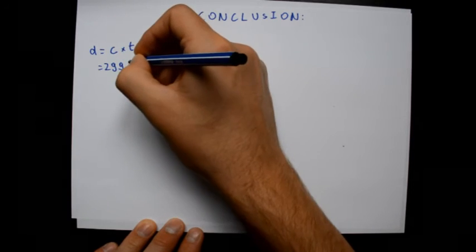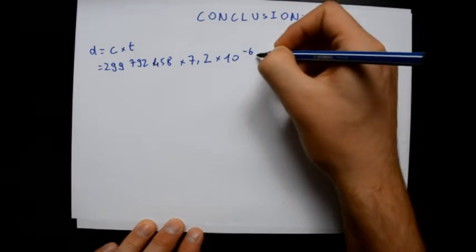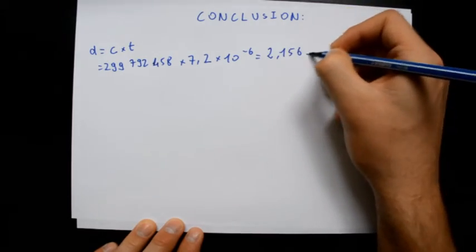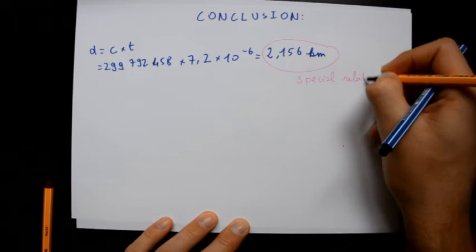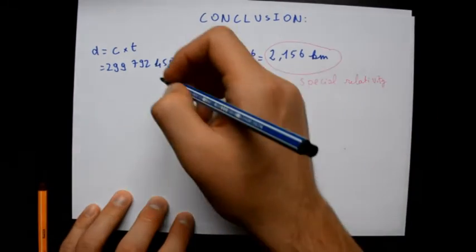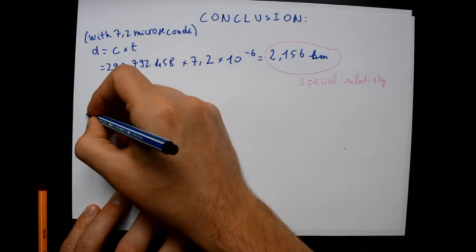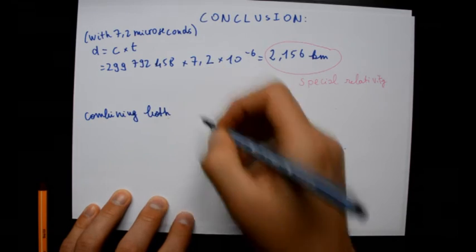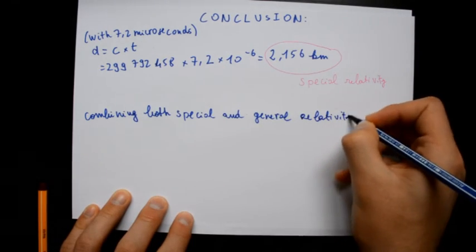To conclude, we can say that the mistake of localization due to special relativity would be about 2 km, which is huge. And if we add general relativity, it would be 11 km. So that's why we really need synchronization between clocks, and that is also why relativity is very important in understanding the GPS.